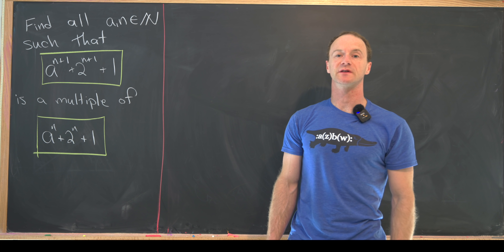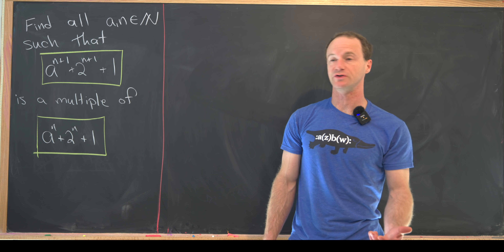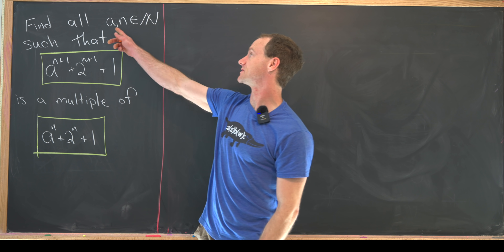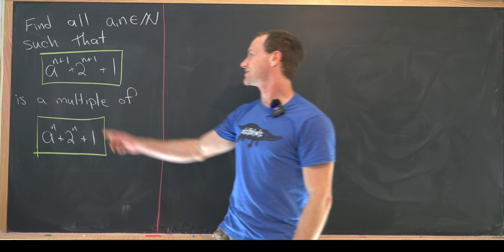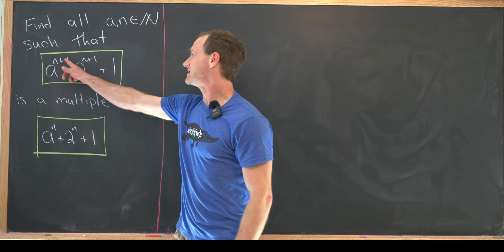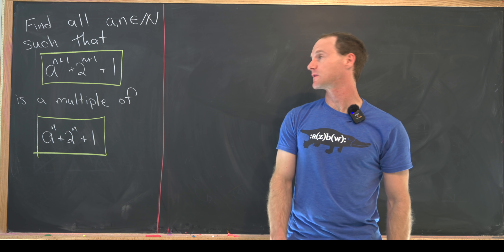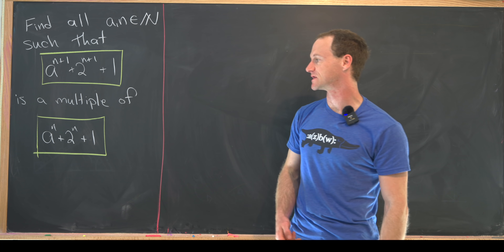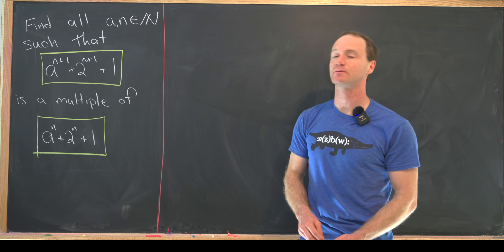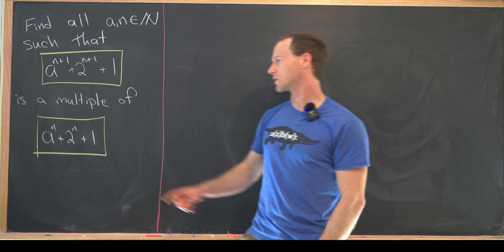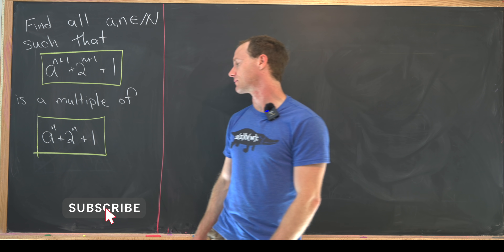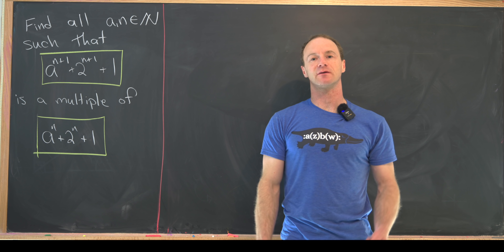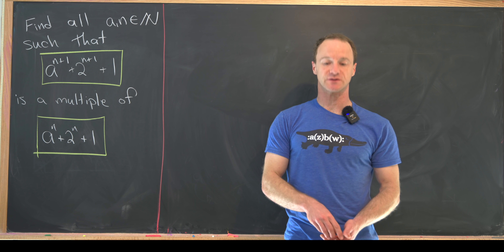Here is a nice and tricky divisibility problem. We want to find all natural numbers a and n such that a^(n+1) + 2^(n+1) + 1 is a multiple of a^n + 2^n + 1. In other words, a^n + 2^n + 1 divides a^(n+1) + 2^(n+1) + 1.